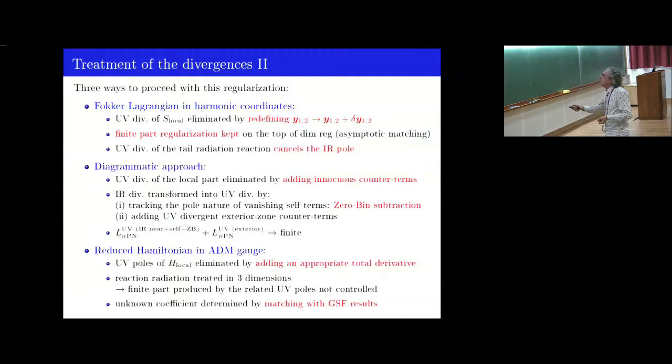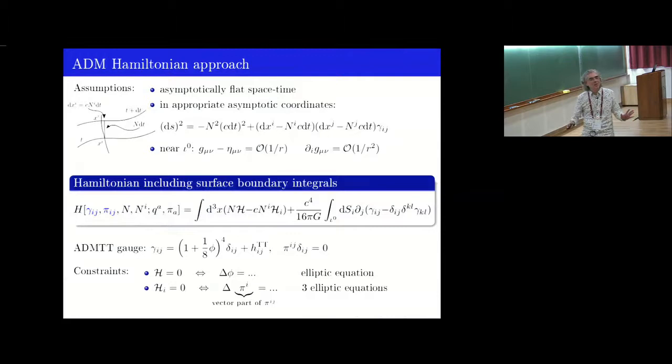In the ADM approach, the UV poles are treated in a very simple way, since they are just total time derivatives. However, because no tail formulation is available in D dimensions in the ADM approach, there is an unknown coefficient related to the finite part associated to the IR pole. And this unknown coefficient was determined using a matching procedure with gravitational self-force results. So at the end, we find the same, completely the same result after some struggle.